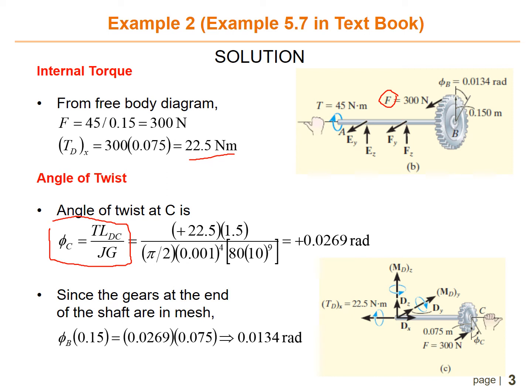So angle of twist at C is 22.5 times length 1.5 divided by J, which is pi over 2 times 0.001 to the power of 4, and then G is 80 times 10 to the power of 9. And then you can get theta at C is 0.0269 radians.